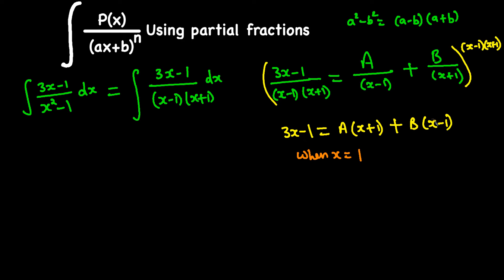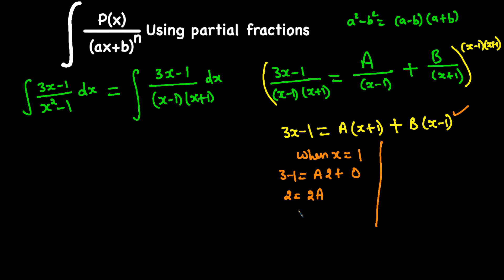Now let x equal 1, since x minus 1 equals 0 gives us x equals 1. Plugging in: left side gives 3(1) minus 1 equals 2, and the B term becomes 0. So 2 equals A(1 plus 1) equals 2A, and dividing both sides by 2 gives A equals 1.